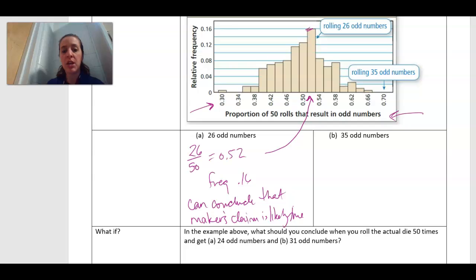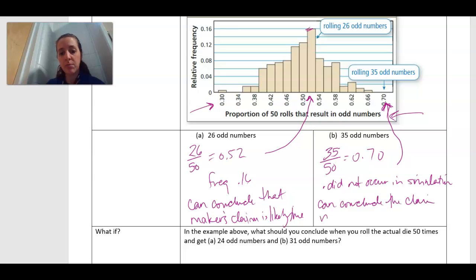Okay, so now let's look at 35 odd numbers. To find that I would have my 35 divided by 50, which gives me that ratio or my proportion of 0.70, which in my graph or my simulation is right there, and it didn't happen any time in the simulation. So it did not occur in simulation. So because it didn't occur or my frequency was super low, we can conclude the claim is most likely false. Because remember the claim here, the hypothesis that we were testing, was that it did not favor odd numbers. So if it doesn't favor odd numbers, we would try and assume that we should get an even mix, which we can see here in our graph because most of our numbers fall in the middle. Here I got a lot of odd numbers, so for me that would say that yeah, it's probably most likely false.